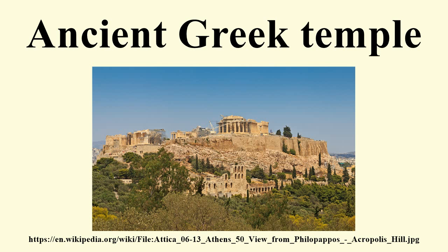A variant has the opisthodomos at the back of the cella indicated merely by half columns and shortened antae, described as a pseudo-opisthodomos. If the porch of a temple in antis has a row of usually four or six columns in front of its whole breadth, the temple is described as a prostyle temple. The whole pronaus may be omitted in this case, or just leave the antae without columns.